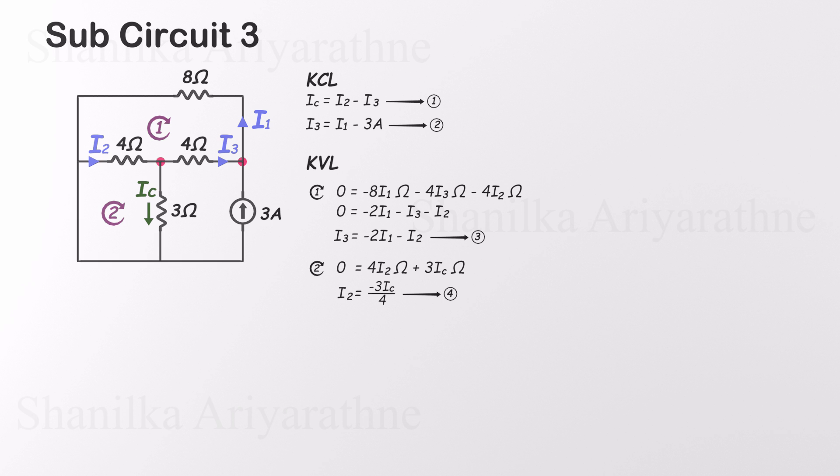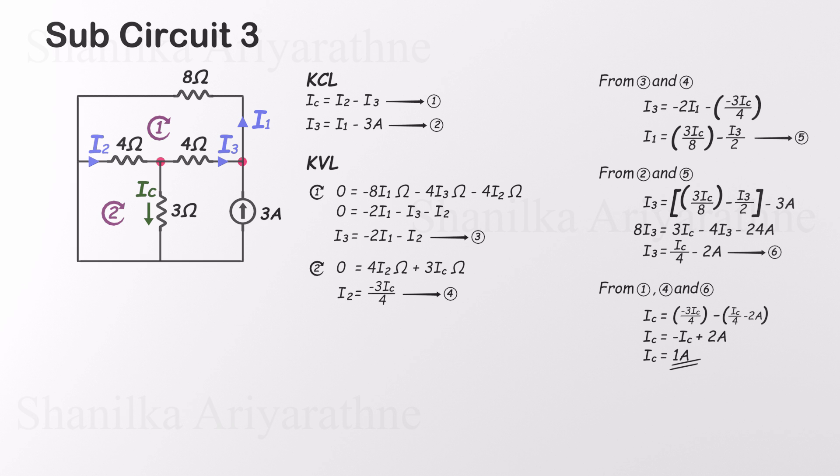Now you can solve these equations however you prefer: substitution, matrix methods, whatever works for you. At the end of the process, you'll find IC is 1 amp. And that's it. Remember, you don't have to follow exactly the same steps I used. The important part is understanding how to break the circuit down and apply the right laws. With practice, you'll be able to spot shortcuts and solve these even faster.